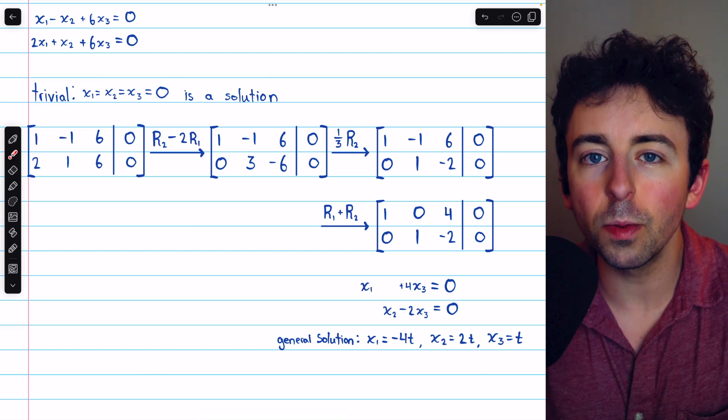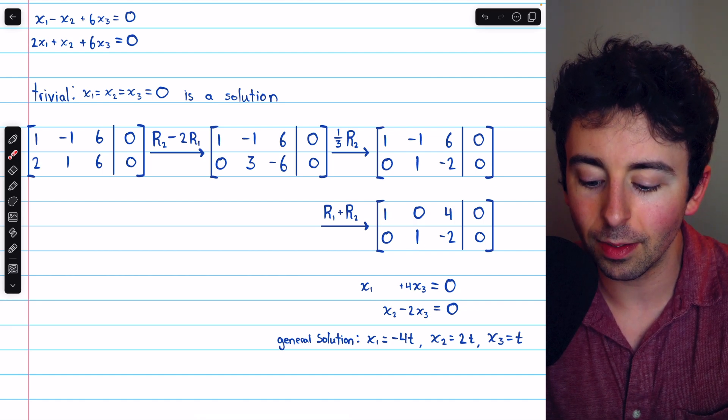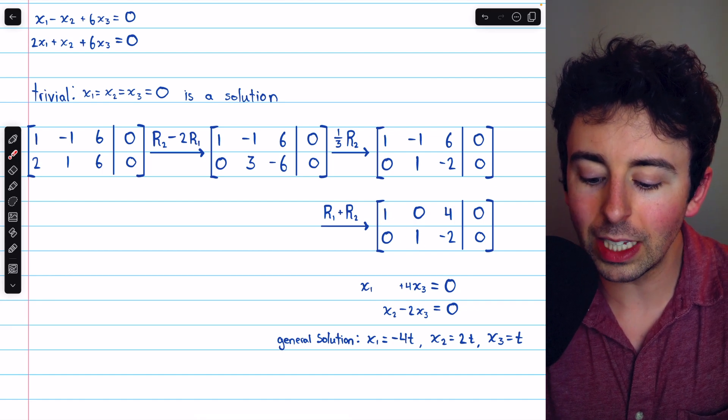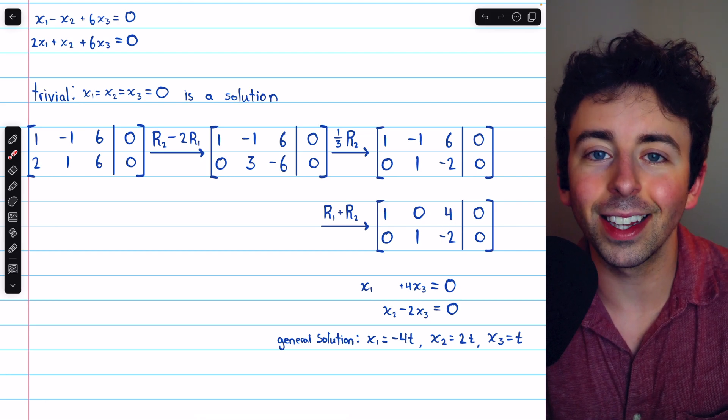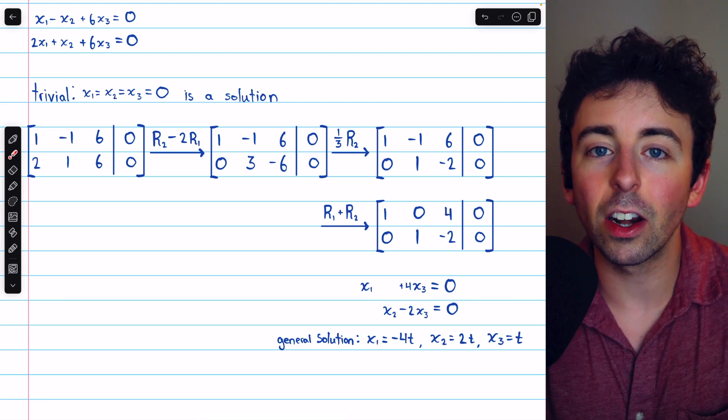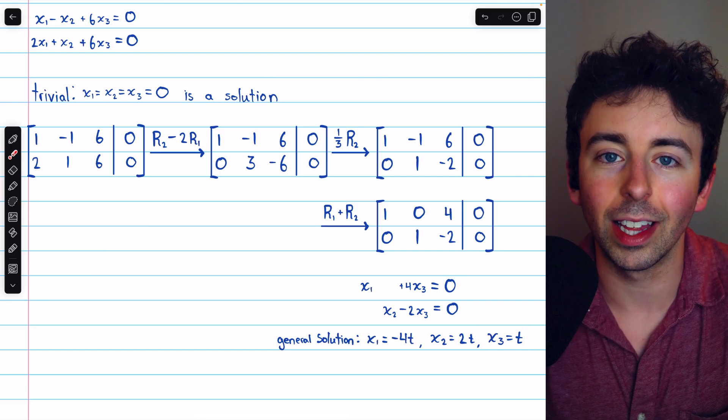Hence, x1 and x2 are what we call leading variables. They correspond to those leading ones. On the other hand, there's no leading one in column three. So x3 is not a leading variable, and we'll assign it an arbitrary parameter, say t. This is what we call a free variable.